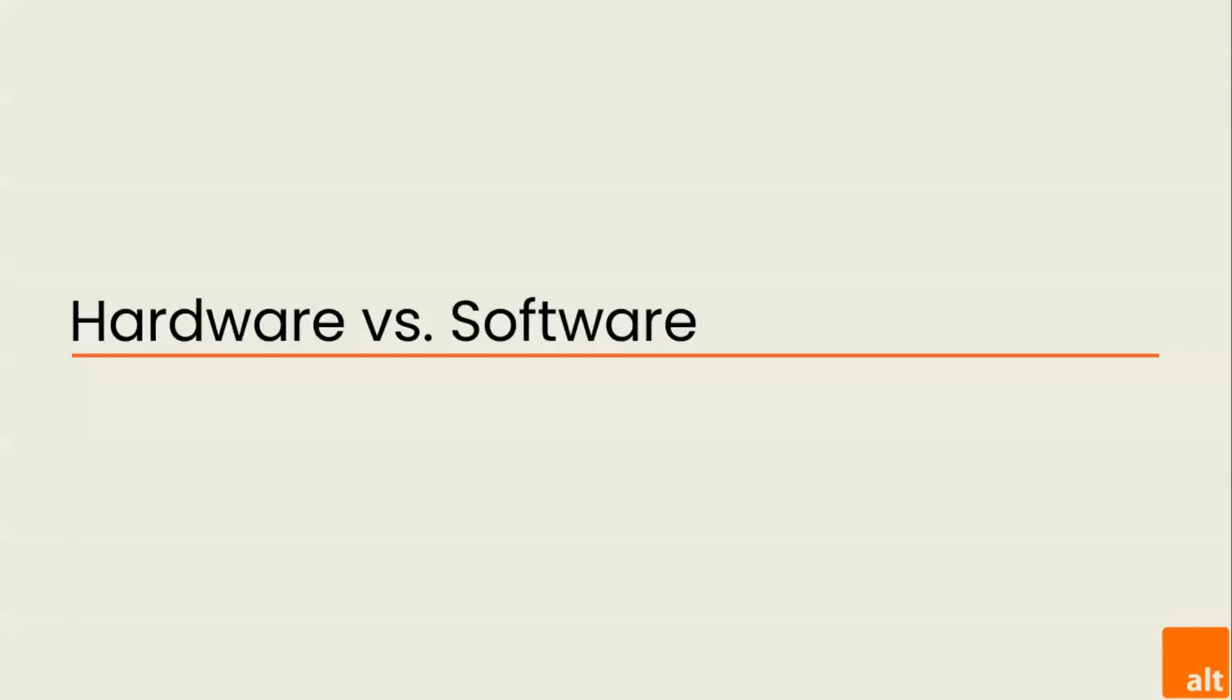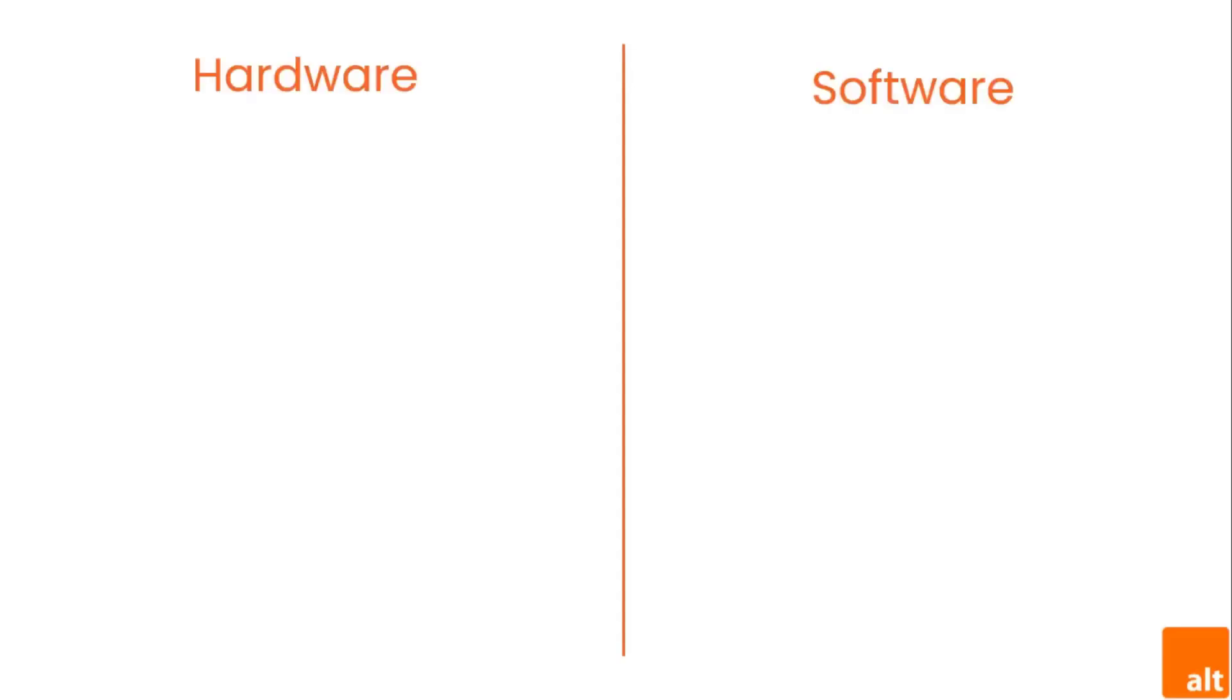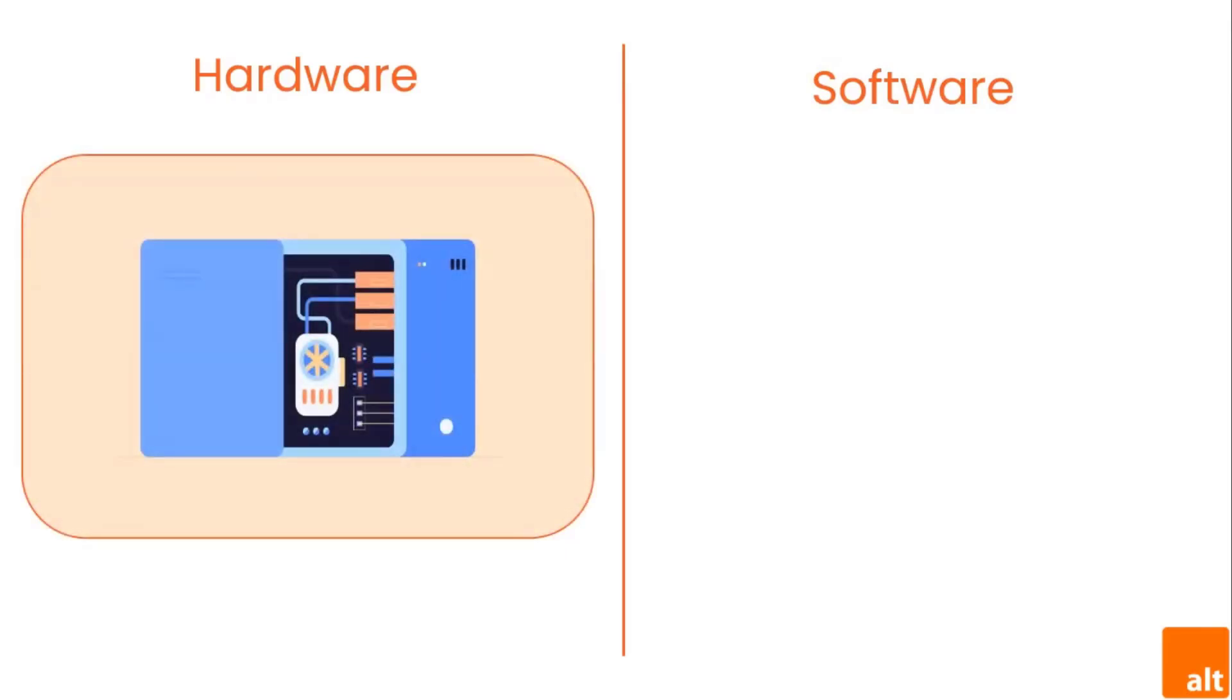Before we talk about different types of computers, let's talk about two things all computers have in common: hardware and software. Hardware is any part of your computer that has a physical structure, such as the keyboard or mouse. It also includes all of the computer's internal parts.